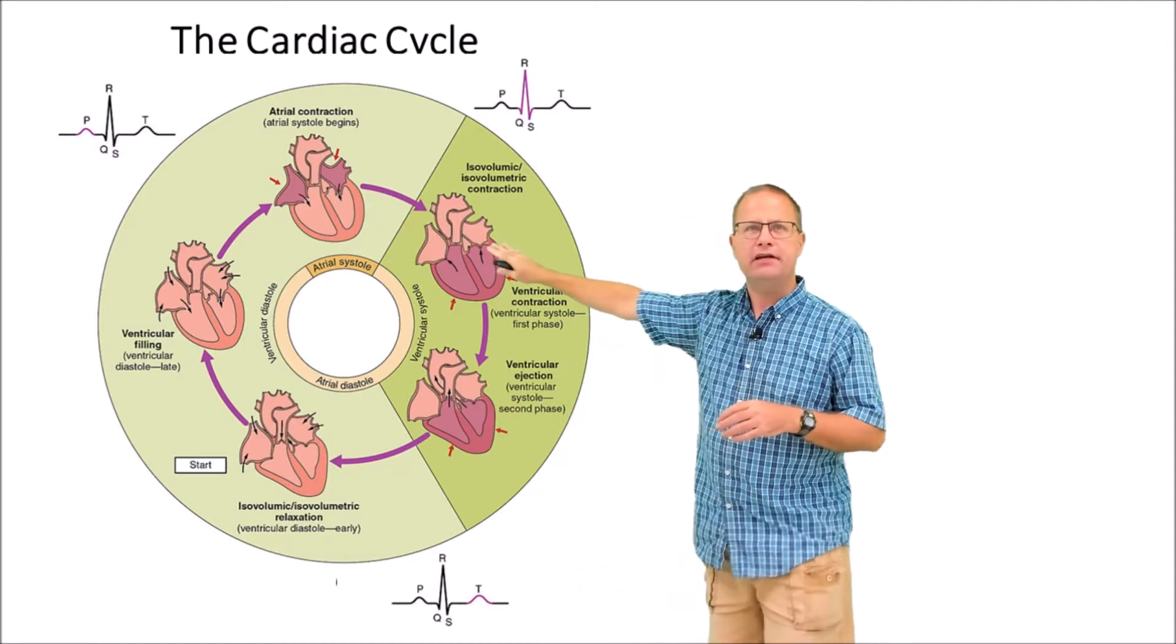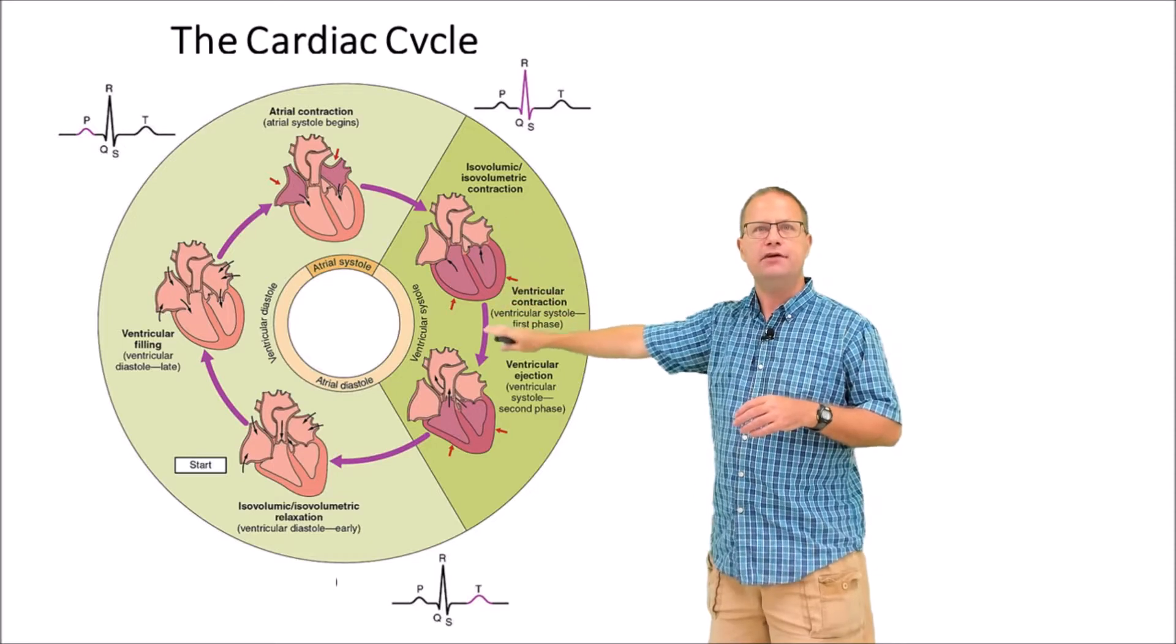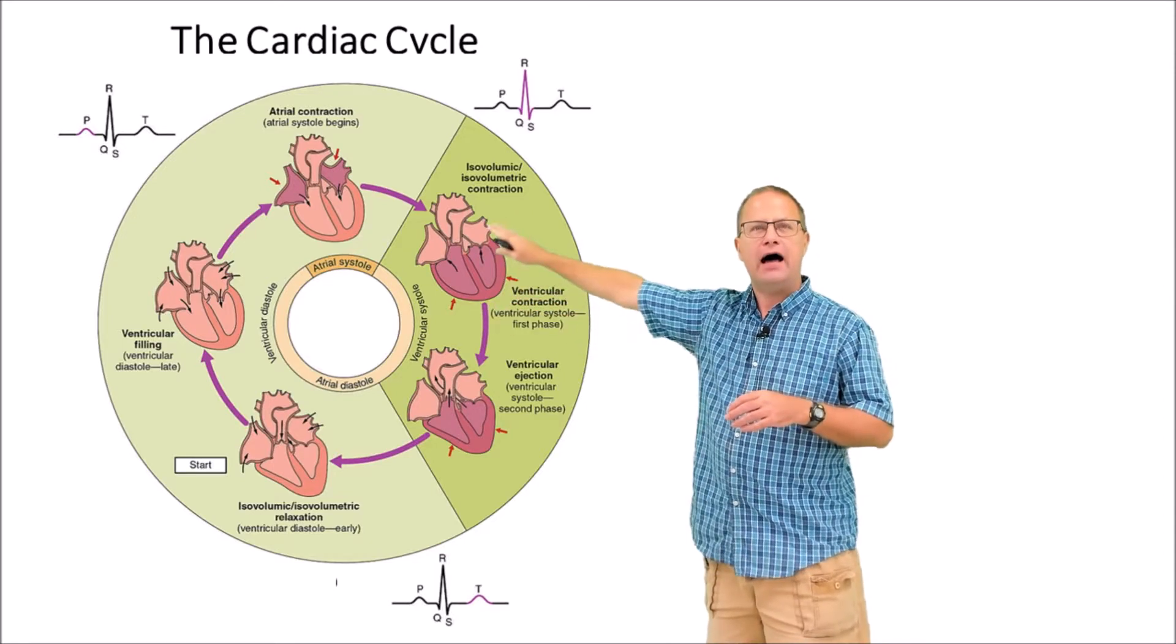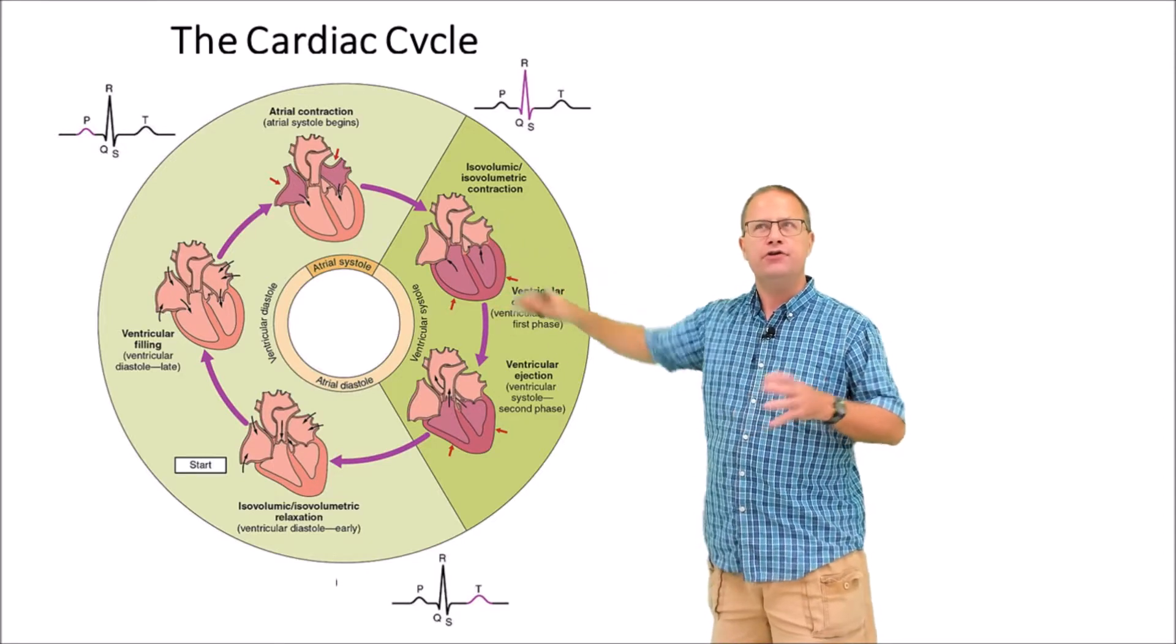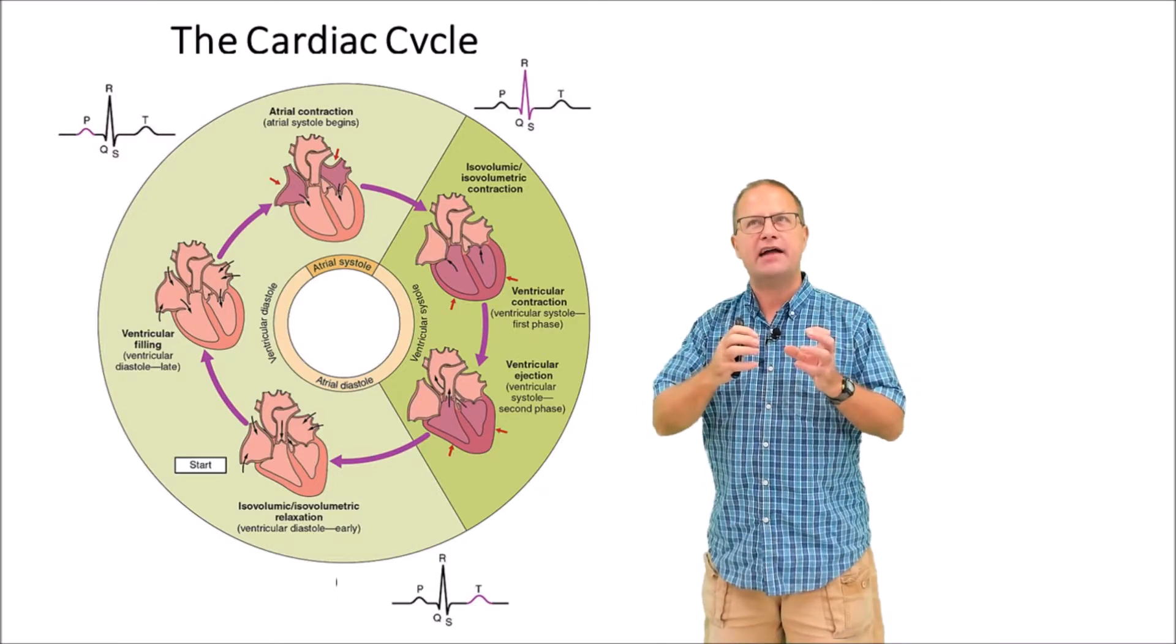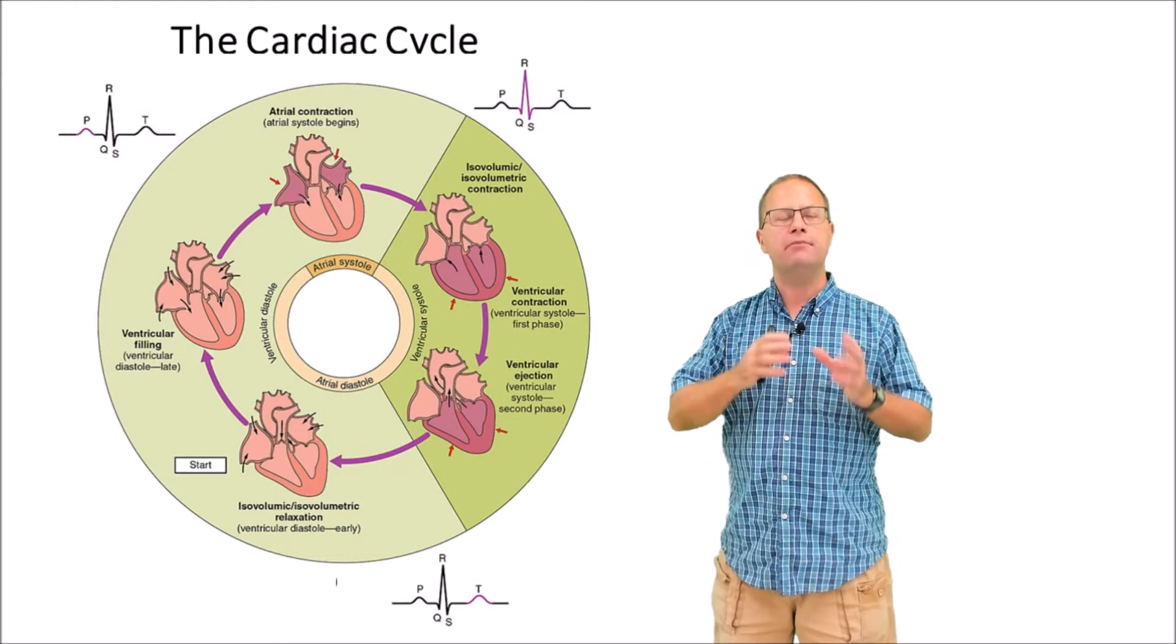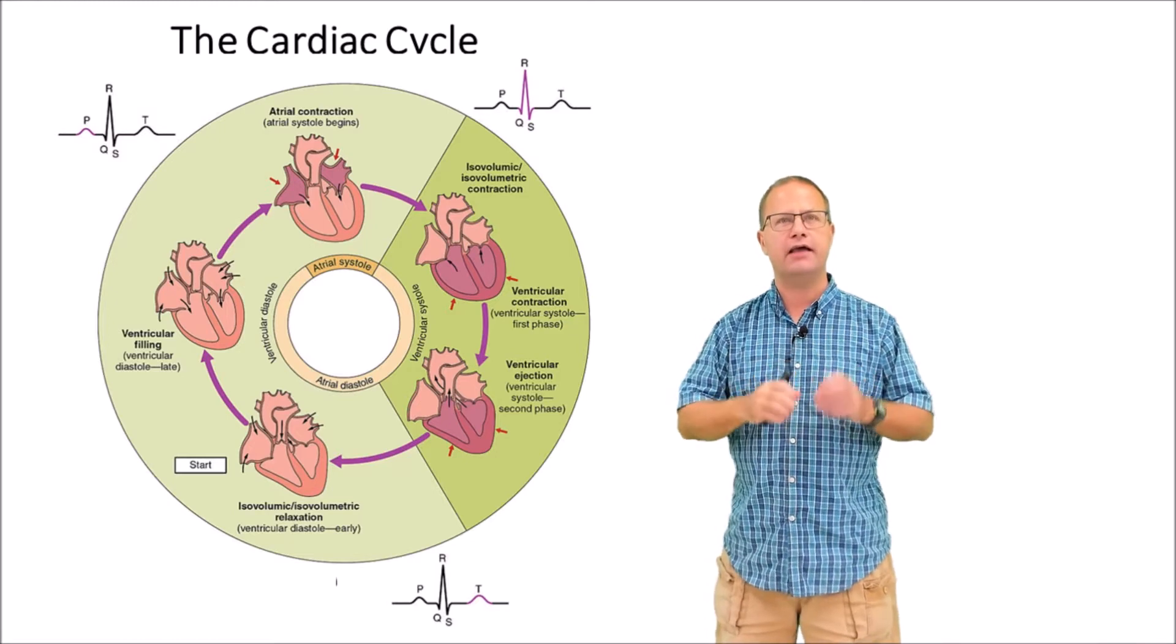Then we enter the period of ventricular systole. Systole has two different sub-phases. We have something called isovolumetric contraction. During this phase the ventricles are contracting but they haven't contracted enough to overcome the back pressure in the pulmonary trunk and the aorta.